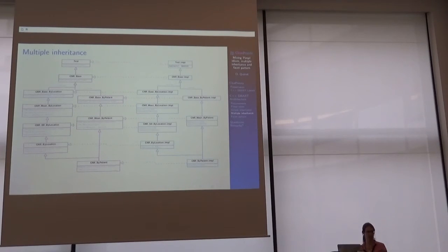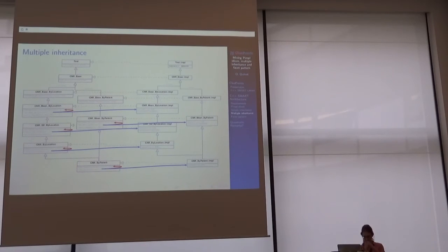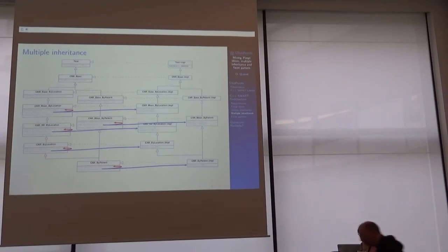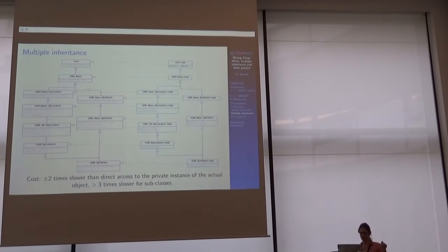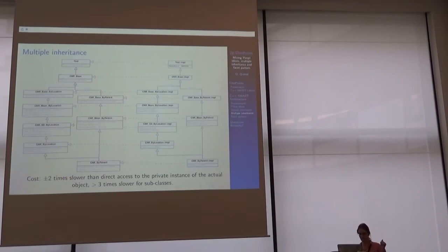For a CNR test it's a bit more complicated, but it's about the same kind of construct. Every time you have a public constructor, you call the static build function in the private class, which returns a private shared pointer, and you place it to the base class, which calls the test and the PIMP. The cost this time is two times slower when you want to access the actual object, but if you want to access subclasses it's about three times slower because you have to do a dynamic cast to the right object.